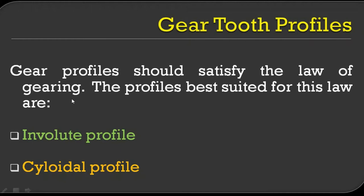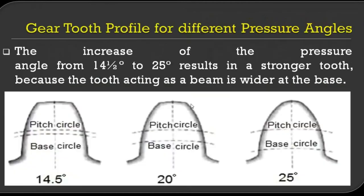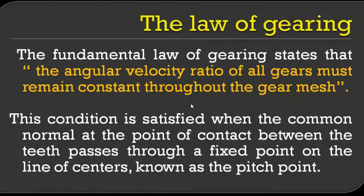Gear profile should satisfy the law of gearing. The profiles which satisfy the law of gearing are used for the gear tooth profile. The law of gearing states: the angular velocity ratio of all gears must remain constant throughout the gear mesh. This condition is satisfied when the common normal at the point of contact between the teeth passes through a fixed point on the line of centers, which is known as the pitch point.